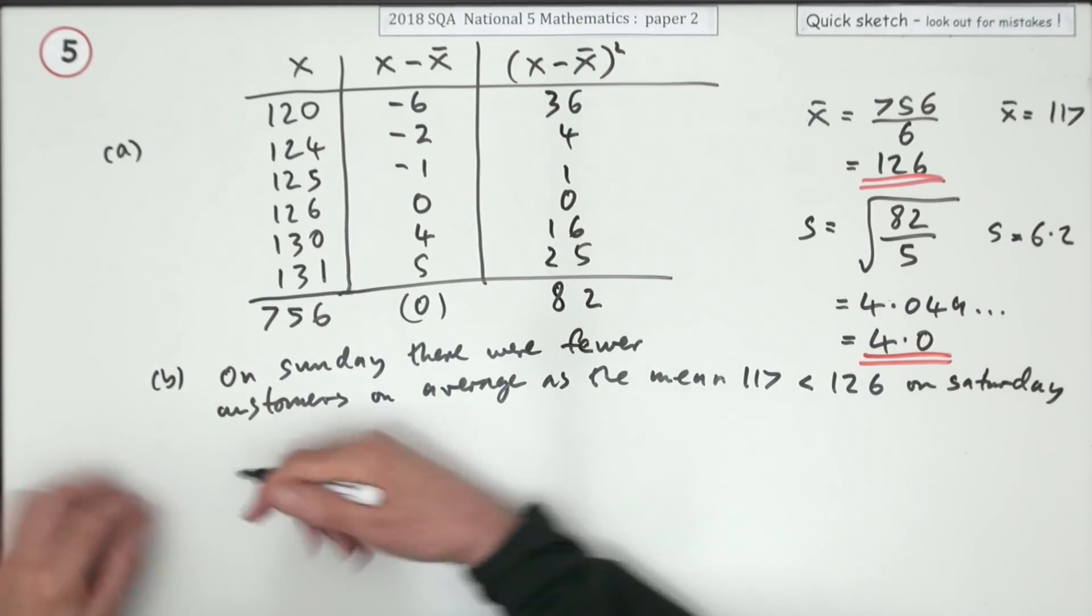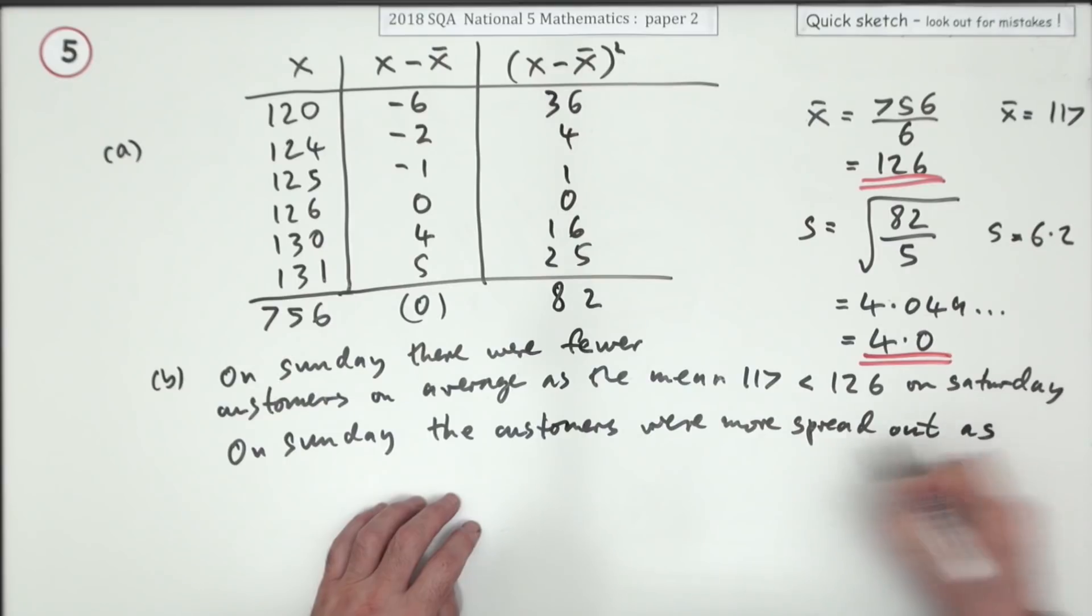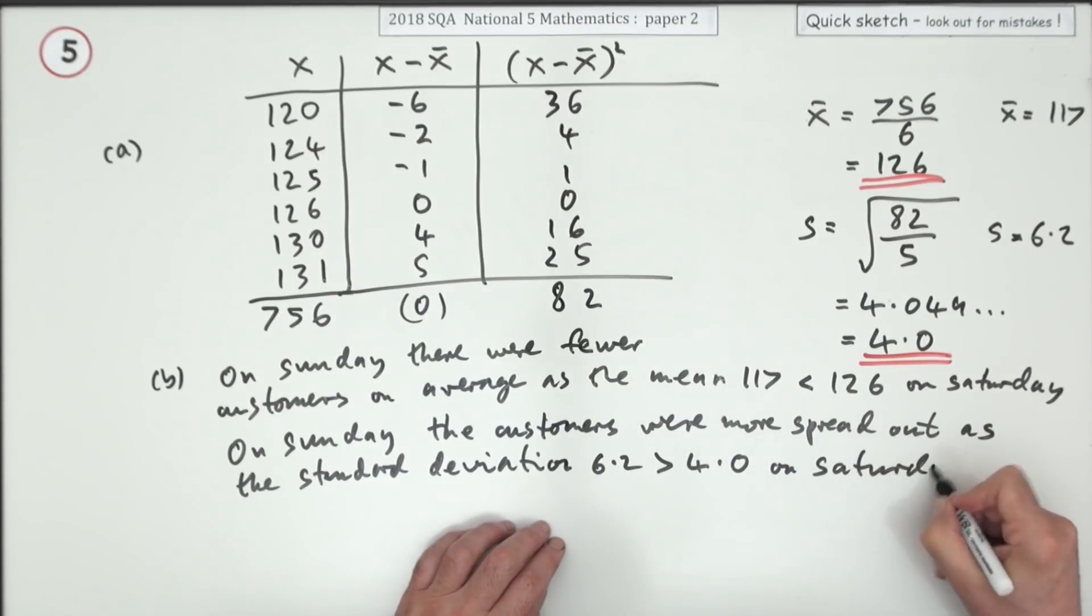Now standard deviation. On Sunday the customers were more spread out, or you could say less consistent, as the standard deviation 6.2 is greater than 4.0 on Saturday.